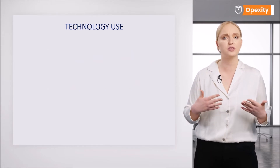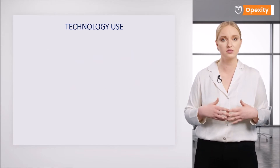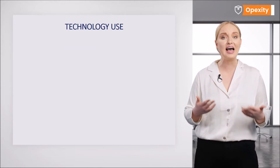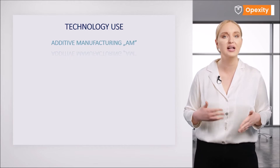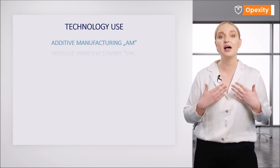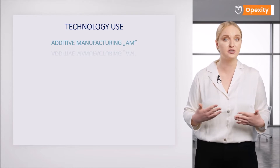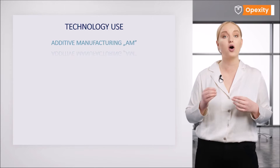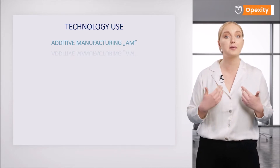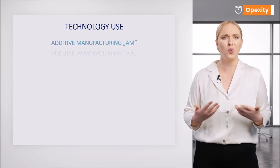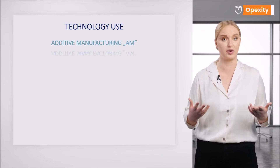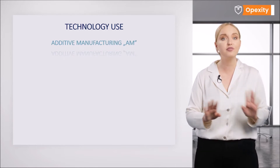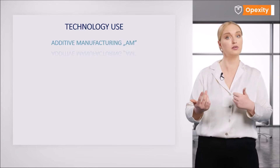Where can we find use for such technologies? It's probably easier to answer the question: where can't it be used? Additive manufacturing products, AM for short, can be found practically everywhere. The first applications involve the rapid production of prototypes and concept samples in R&D areas. I myself have often wondered what a product I sketched out in a computer program would look like. Now it's possible — you can print practically everything. Are you missing a part? Print it yourself.